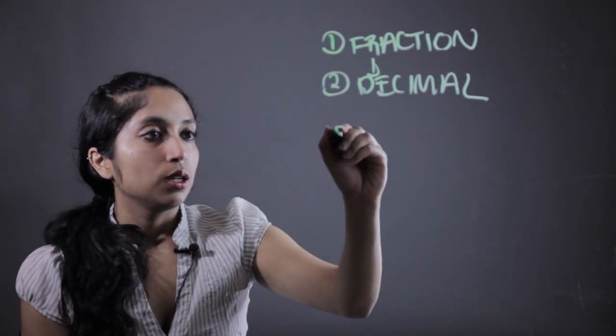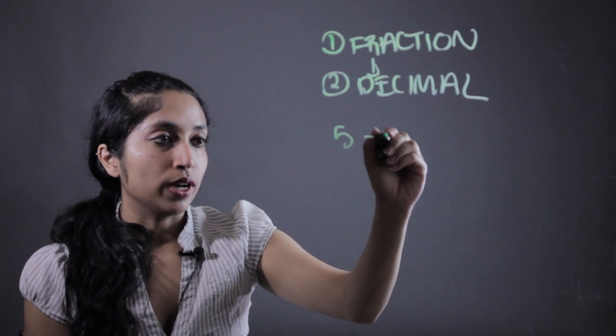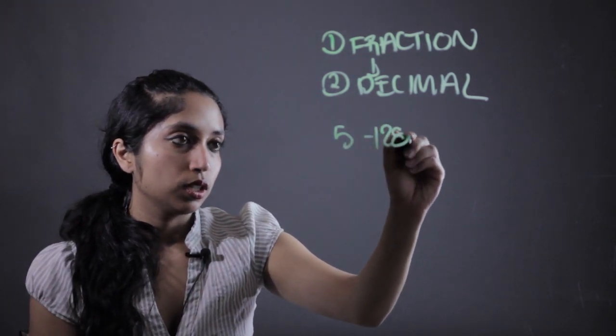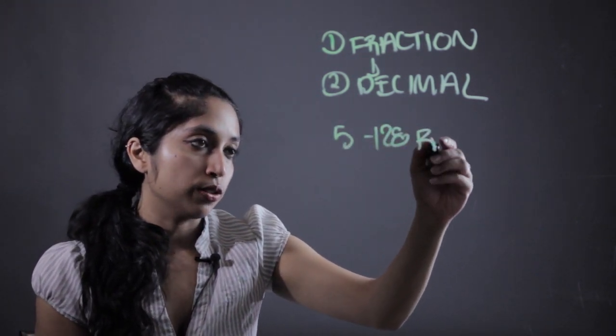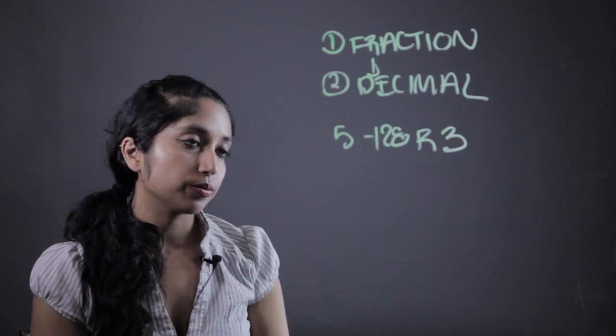So say we're dividing 128 by 5. We're going to leave us with a remainder of 3. Okay?